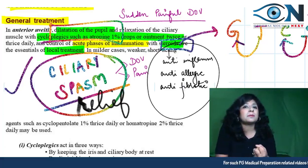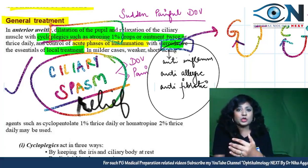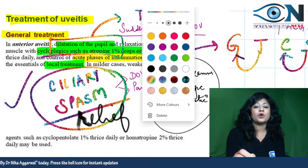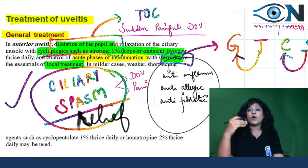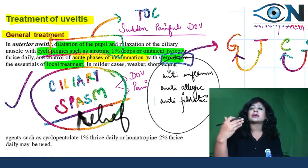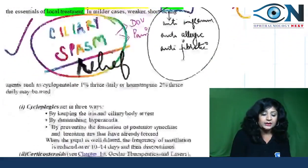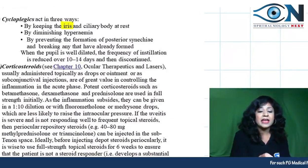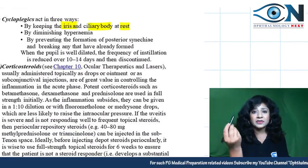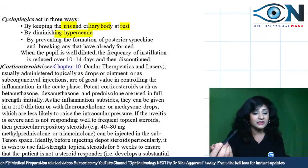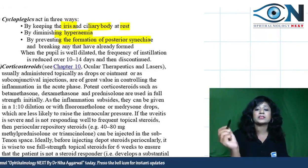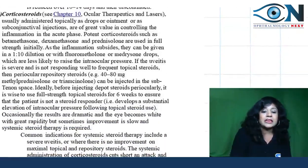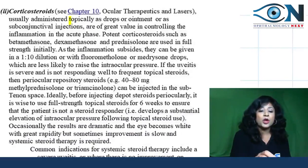The main problem of uveitis — ciliary muscle spasm — is not directly relieved by steroids. Mydriatics and cycloplegics are treatment of choice because they relieve ciliary muscle spasm, break and prevent posterior synechiae, and decrease vascular permeability, thereby decreasing exudation.